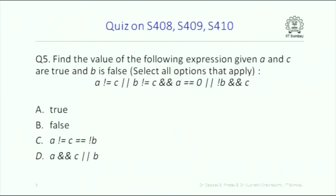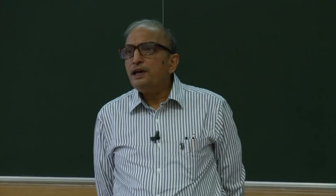Does option A apply? Yes. Does option B apply? No — if A applies, B cannot apply. What about C? No, it's false. Does D apply? Yes. How does it become true? AND is evaluated first. A is true and C is true, so A AND C is true. True OR B — B is false — so true OR false is true. Therefore the expression is true.